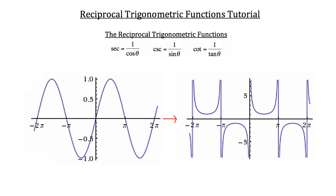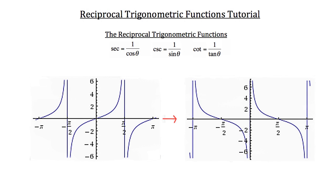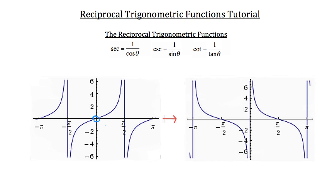Now let's look at the cotangent function. The tangent function is on the left and cotangent on the right. The tangent function has a period of pi units and that typical S-shaped curve — in science we call that a sigmoidal curve. There's an asymptote every pi units along the graph. In the parent function of tangent, y equals tangent theta, one curve passes right through the origin.